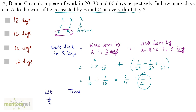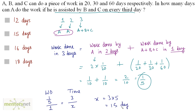So 1/5 of the work is done in 3 days. To complete the full work, we set up a proportion and solve for x. x equals 3 times 5, which is 15. So 15 days are needed to complete the work if A is assisted by B and C every third day. The answer is option B.